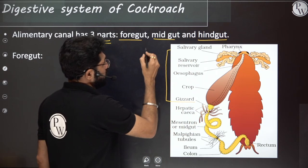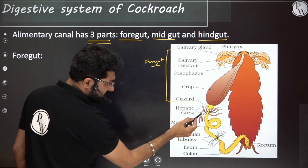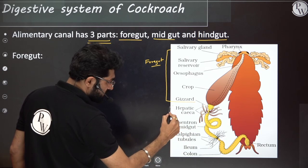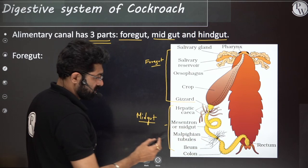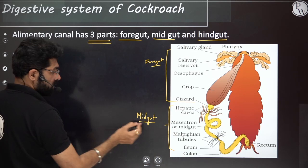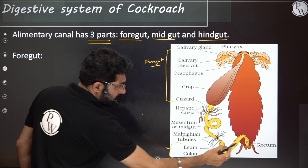The foregut extends up to the gizzard. The hindgut includes the ileum, colon and rectum. The midgut is the mesenteron — the yellow region visible in diagrams. So ileum, colon and rectum form the hindgut; the mesenteron is the midgut.